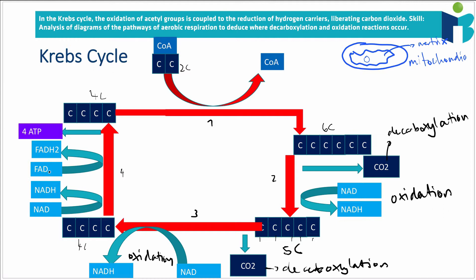And we have this other electron carrier. You can think of it like a cousin to NAD, which then is going to also be reduced. And so you have FAD turning into FADH2. And then finally, we have some ATP being formed.